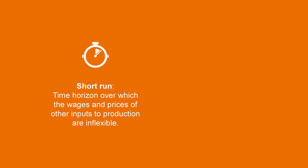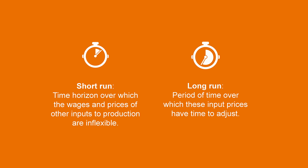The short run consists of the time horizon over which the wages and prices of other inputs to production are inflexible. Within this timeframe, it is assumed that there may be imbalances, since some prices may have adjusted to changes in market conditions — those of final products — while others have not — those of the inputs. The long run consists of the period of time over which input prices have the time to adjust, and the overall price level, contractual wage rates, and expectations are fully adjusted in equilibrium, which allows us to analyze GDP and general prices.